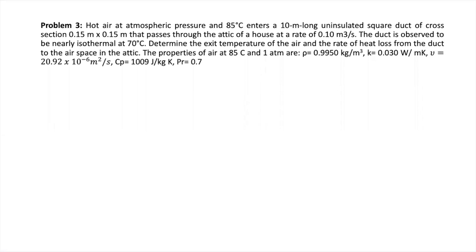Let's start with this problem. Hot air at atmospheric pressure and 85°C enters a 10-meter-long uninsulated square duct of cross-section 0.15 by 0.15 meters that passes through the attic of a house at a rate of 0.10 cubic meters per second. The duct is observed to be nearly isothermal at 70°C. Determine the exit temperature of the air and the rate of heat loss from the duct to the airspace in the attic.